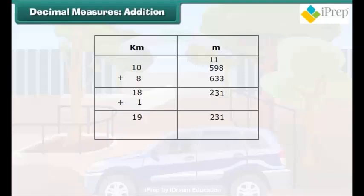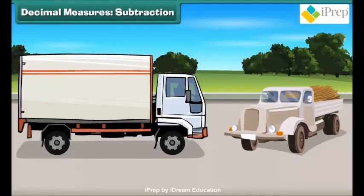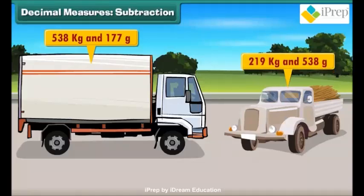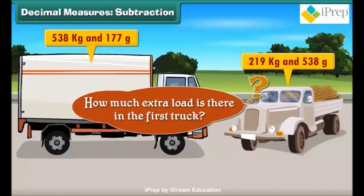Similarly, we can add the quantities given in different units. Let us look at another example. One truck has a load of 538 kilograms and 177 grams of grain and another has a load of 219 kilograms and 538 grams of grain. How much extra load is there in the first truck?